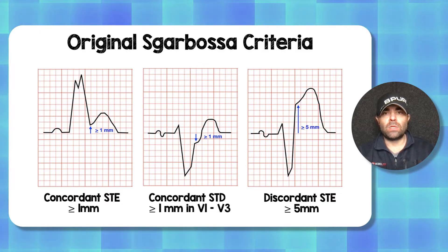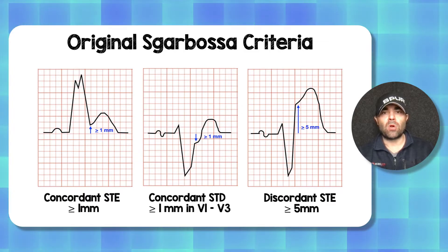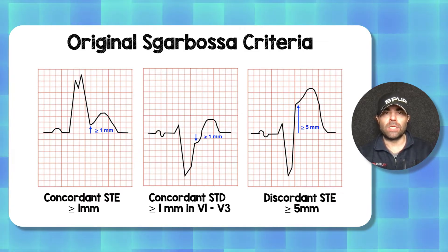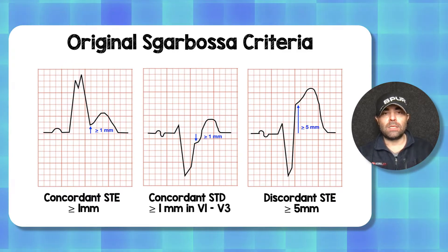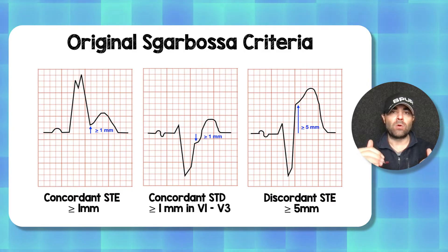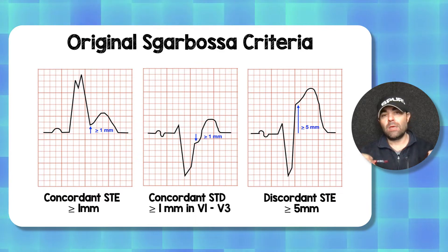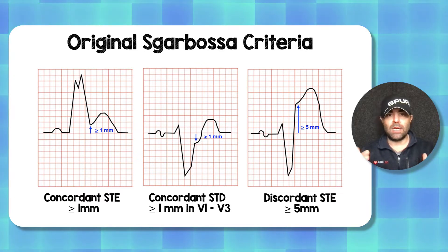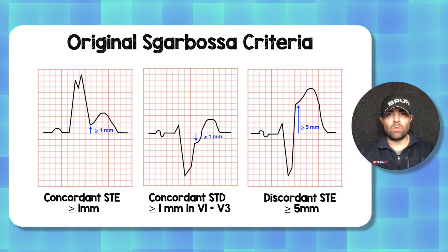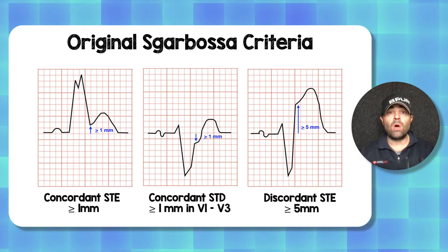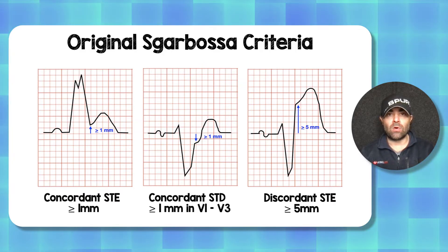Let's start off with what the original Sgarbossa criteria are — there are really only three components. Two of them are concordant change and one is discordant change. Concordant change means the ST segment is going in the same direction as the QRS. If your QRS is going up, so is your ST segment; if it's primarily going down, then your ST segment is also going down. All you need is greater than or equal to one millimeter of change in only one lead, and that is most likely going to be an occlusion myocardial infarction.